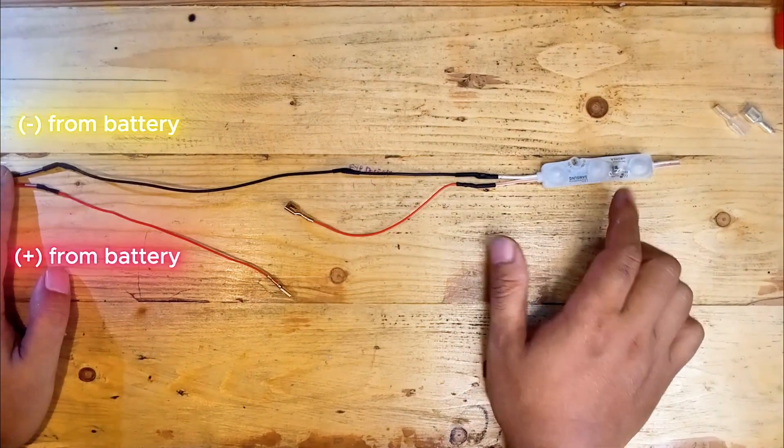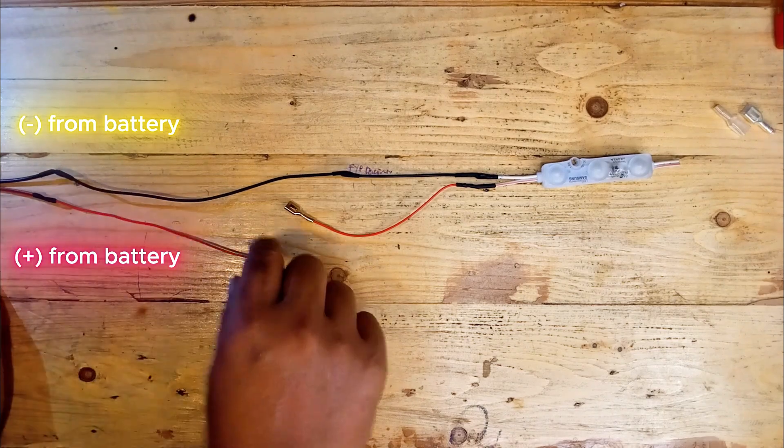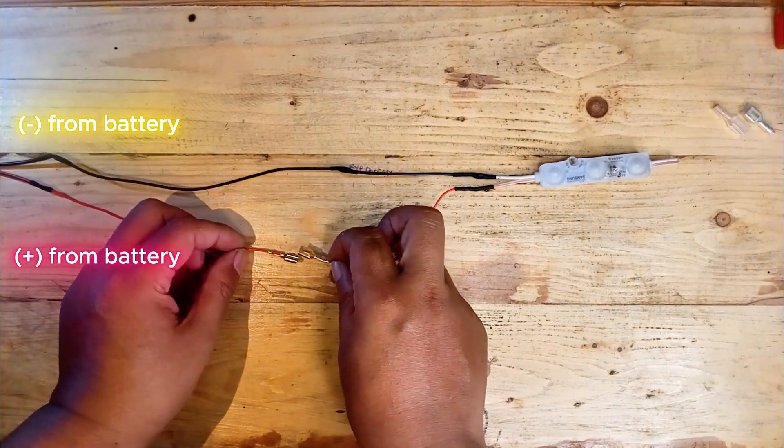First let's quickly go over how the circuit works. The battery provides power to the LED light and the switch acts as a control point to turn the light on or off.